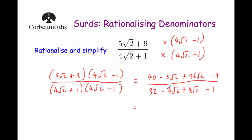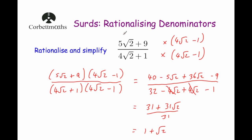Now we simplify. The minus 4 root 2 and plus 4 root 2 cancel out on the denominator. On the numerator, 40 subtract 9 is 31, and minus 5 root 2 plus 36 root 2 is plus 31 root 2. On the denominator, 32 subtract 1 is 31. Both terms on the numerator are multiples of 31, so we divide by 31: 31 divided by 31 is 1, and 31 root 2 divided by 31 is root 2. So 5 root 2 plus 9 over 4 root 2 plus 1 simplifies to just 1 plus root 2. If you multiply both numerator and denominator by the conjugate, it will rationalize the denominator.